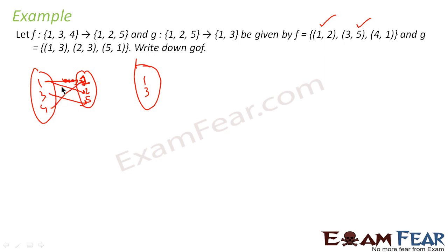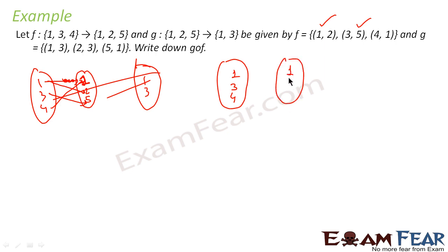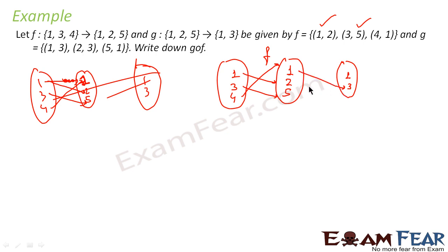Let me draw this again. We have f mapping {1,3,4} to {1,2,5}: the pairs are (1,2), (3,5), and (4,1). For function g mapping {1,2,5} to {1,3}: the pairs are (1,3), (2,3), and (5,1). We have to find g∘f.